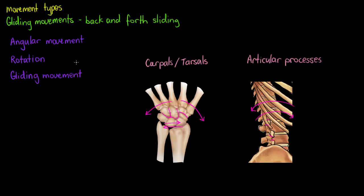So there we have our three movement types: angular, being increasing or decreasing the angle between joints; rotation, being rotating a bone around its own axis such as shaking your head as if saying no; and gliding movements, moving your hands side to side with the bones sliding across each other. The special movements category exists because all movements within it do not fit into angular, rotation, or gliding, and they're usually only achievable at one joint.